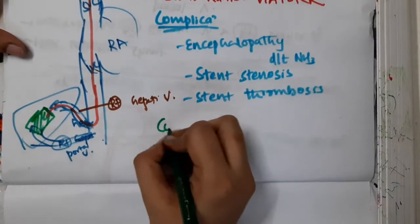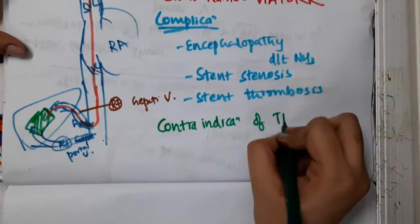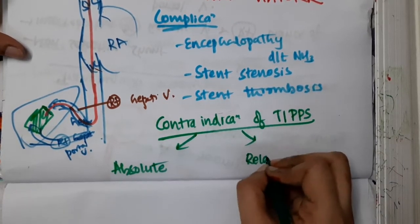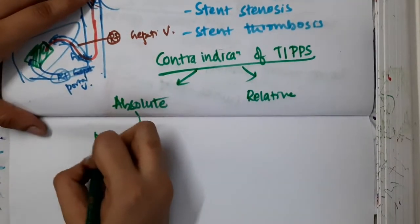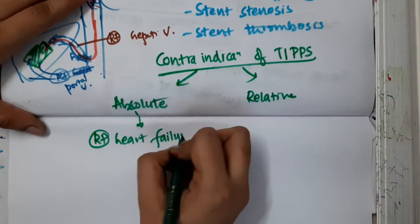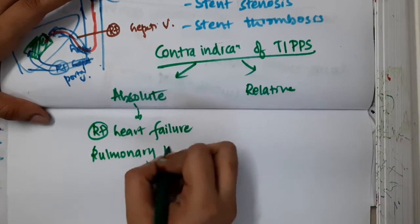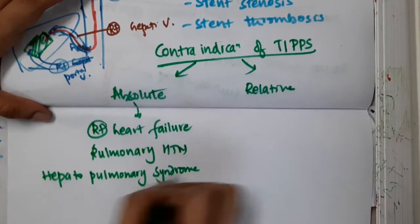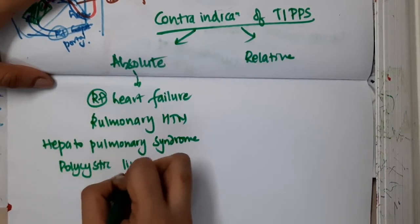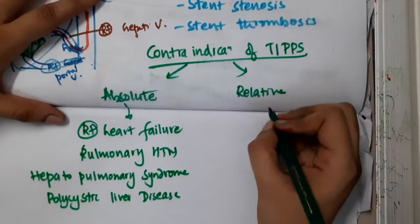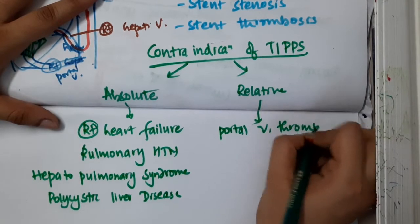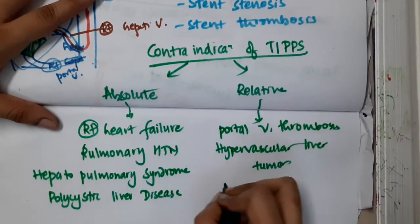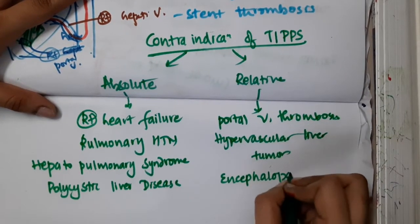Now, the contraindications of TIPS can be divided into absolute and relative contraindications. Absolute contraindications include right heart failure, pulmonary hypertension, presence of hepatopulmonary syndrome, and polycystic liver disease. Relative contraindications include portal vein thrombosis, hypervascular liver tumor, and encephalopathy.